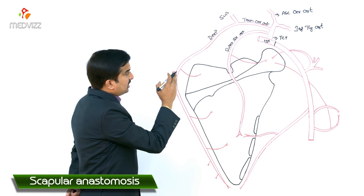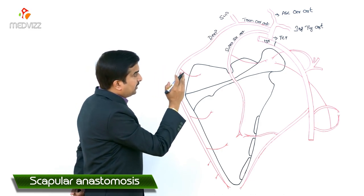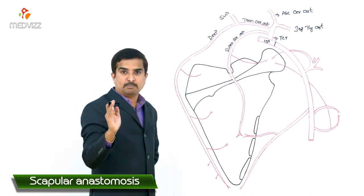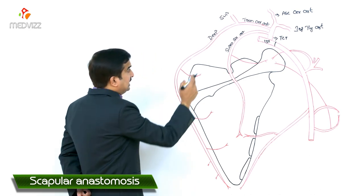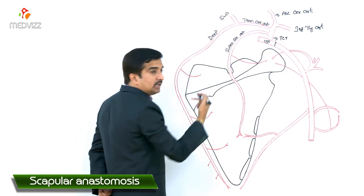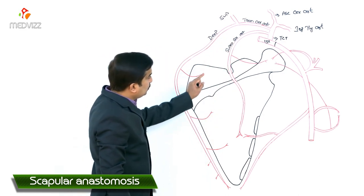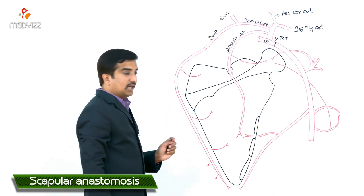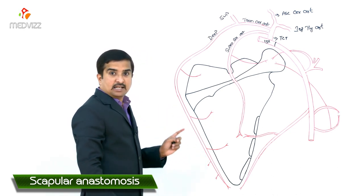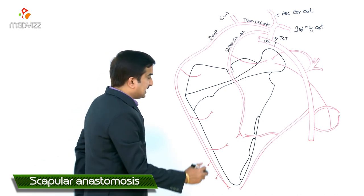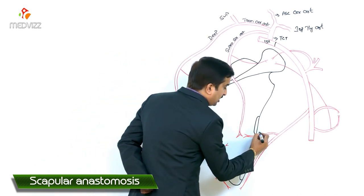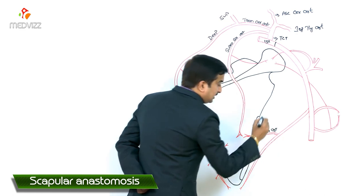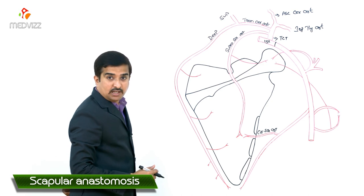As you can see clearly, the ascending cervical artery as well as the inferior thyroid artery, which are branches of the thyrocervical trunk, are not taking part in the scapular anastomosis. Only the deep branch of the transverse cervical artery as well as the suprascapular artery take part in the scapular anastomosis around the body of the scapula.